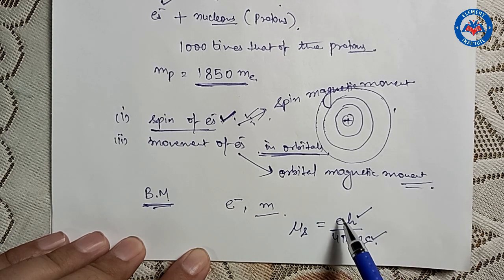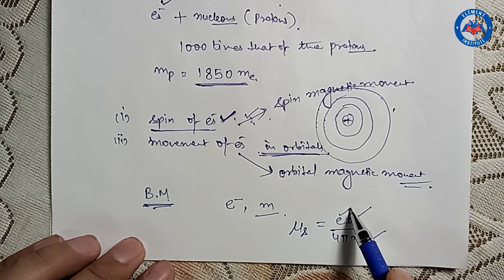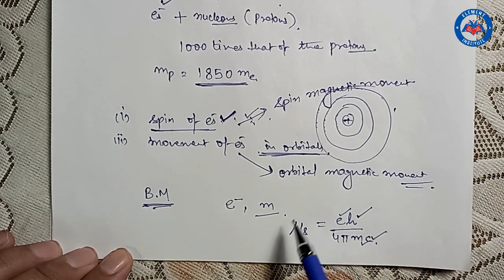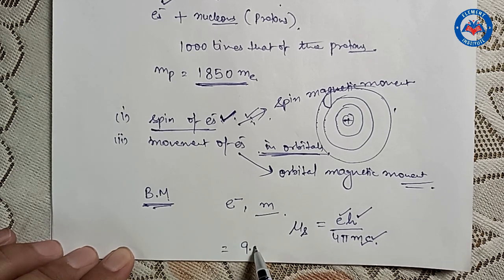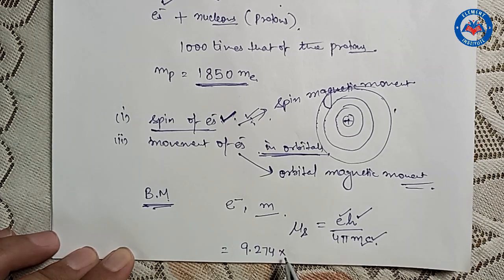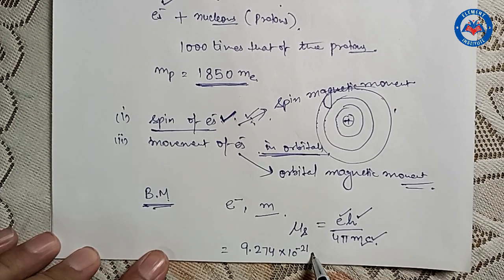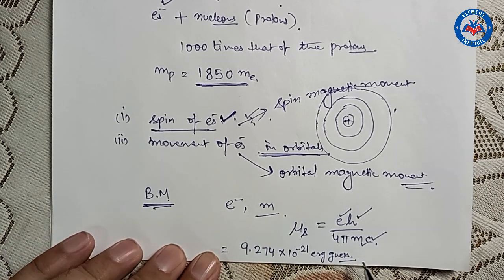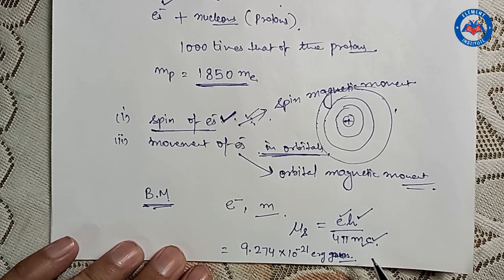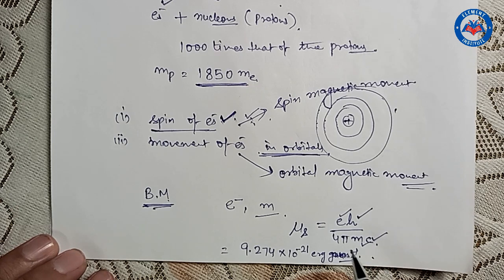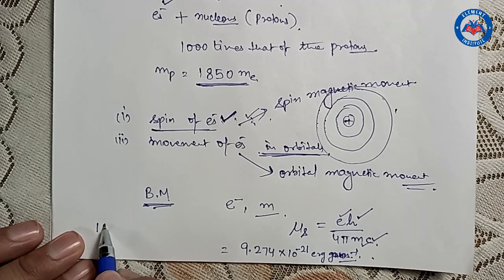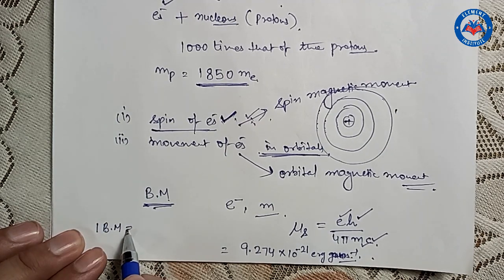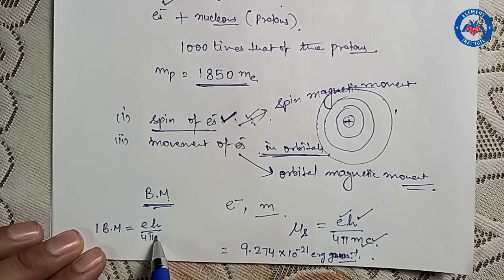The value of μₛ as obtained by this expression is around 9.274 × 10⁻²¹ ergs per gauss. This is taken as 1 unit of magnetic moment. So we can say that 1 Bohr magneton is equal to Eh / (4πmc).